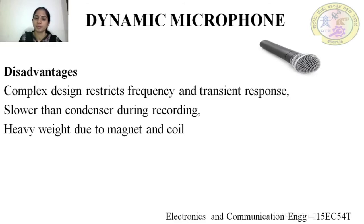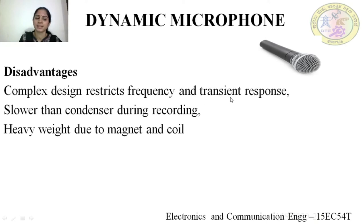Disadvantages of dynamic microphone: the ideal characteristics of a microphone is a flat frequency response curve, able to sense all sound signals from 20 Hz to 20 kHz, and also capable of sensing very low-level signals — that is, transients. But in the moving coil microphone, due to the complex design — that is, heavy duty permanent magnet and a coil of wire — it restricts the frequency and transient response. Hence, dynamic microphone has shaped frequency response and is very less sensitive to transients. The dynamic microphone performs lower than condenser during recording, and has heavy weight due to the magnet and coil.